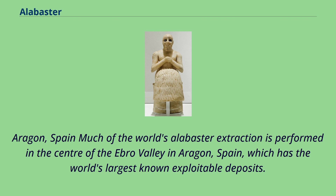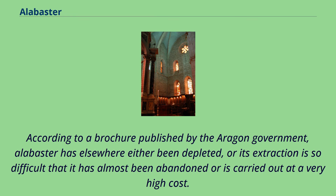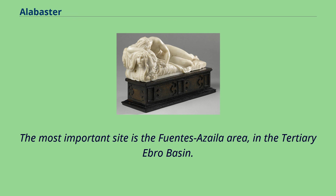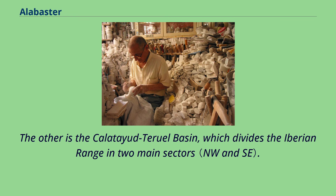Much of the world's alabaster extraction is performed in the center of the Ebro Valley in Aragon, Spain, which has the world's largest known exploitable deposits. According to a brochure published by the Aragon government, alabaster has elsewhere either been depleted, or its extraction is so difficult that it has almost been abandoned or is carried out at a very high cost. There are two separate sites in Aragon, both located in tertiary basins. The most important site is the Fuentes Azela area in the tertiary Ebro Basin. The other is the Calatiu-Turul Basin, which divides the Iberian range in two main sectors.